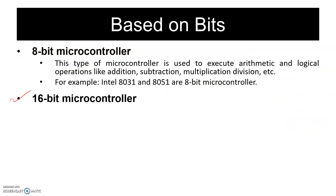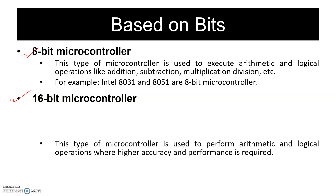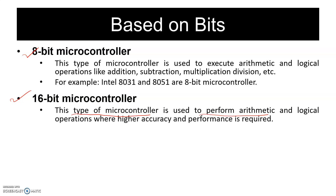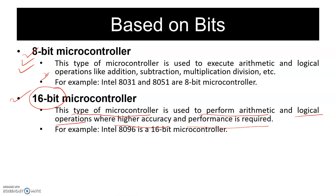The next type is the 16-bit microcontroller. It performs almost the same tasks as the 8-bit microcontroller but with more accuracy and better performance, because you can process 16 bits in one go. An example of a 16-bit microcontroller is the 8096.